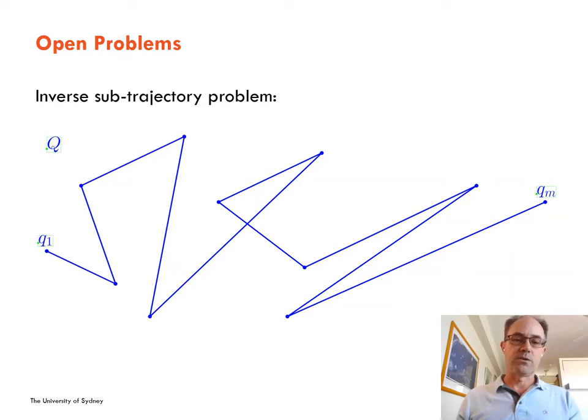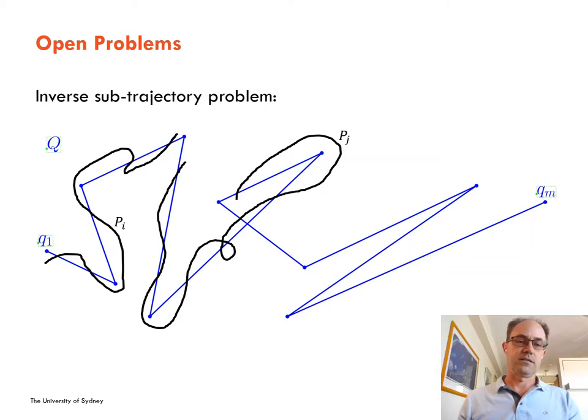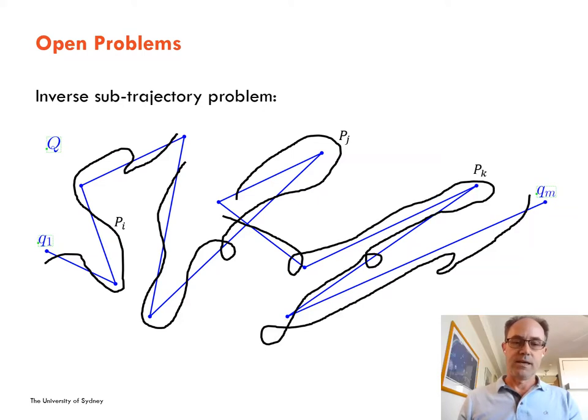Now, there are many open problems, one of which is the inverse sub-trajectory query problem. In this setting, the query is a large trajectory, and the goal is to search for smaller trajectories in an input set that closely cover the query. In this example, the first part of query Q is close to input trajectory P_i, the middle part is close to P_j, and the end part is close to input trajectory P_k.